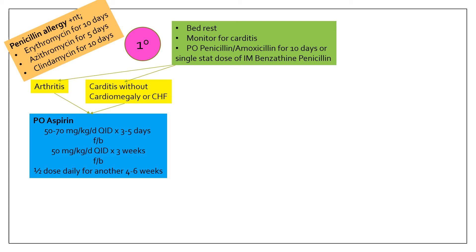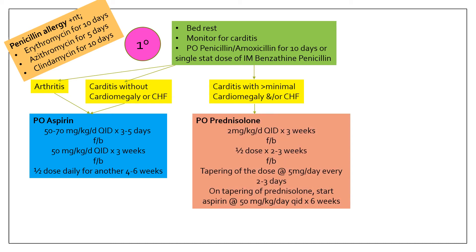If the patient has carditis with more than minimal cardiomegaly on X-ray and/or congestive heart failure, the preferred anti-inflammatory drug is oral prednisolone: 2 mg/kg/day QID for 3 weeks, followed by half dose for 2–3 weeks, then tapering at 5 mg/day every 2–3 days. On tapering prednisolone, start aspirin at 50 mg/kg/day QID for 6 weeks to prevent rebound inflammation.